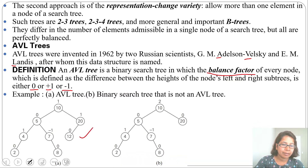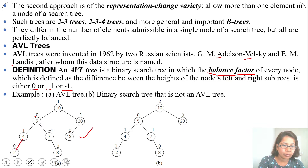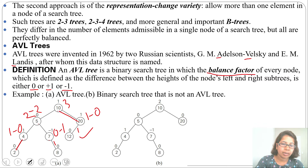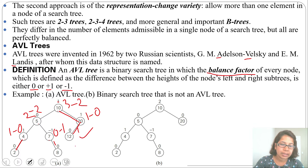In the first tree, the numbers above each node are the balance factors. For node 4, left subtree height is 1, right subtree height is 0, so balance factor is 1. For node 7, left subtree height is 0, right subtree height is 1, so balance factor is −1. For node 5, left and right subtree heights are both 2, so balance factor is 0. For node 20, left subtree height is 1, right subtree height is 0, so balance factor is 1. For node 10, left subtree height is 3, right subtree height is 2, so balance factor is 1. Every node has balance factor 0, +1, or −1, so this is an AVL tree.